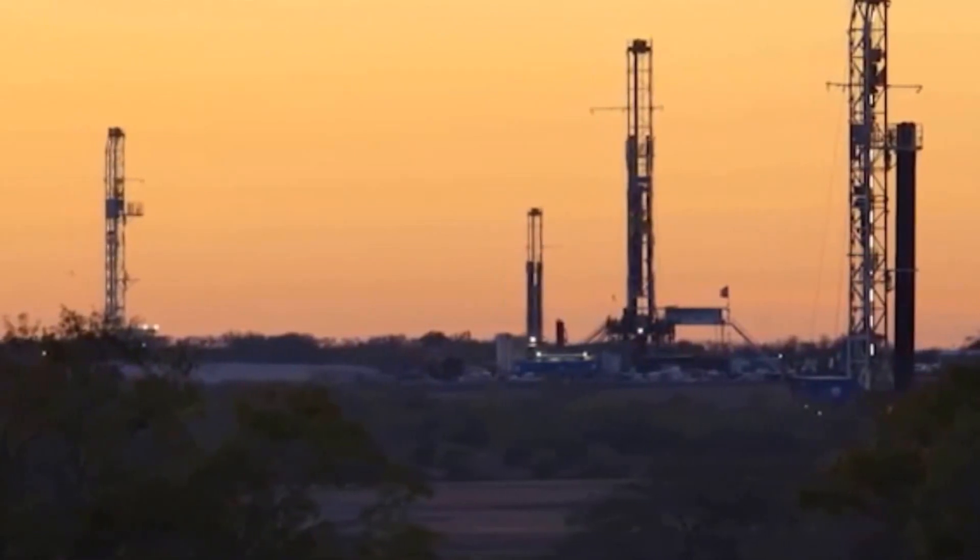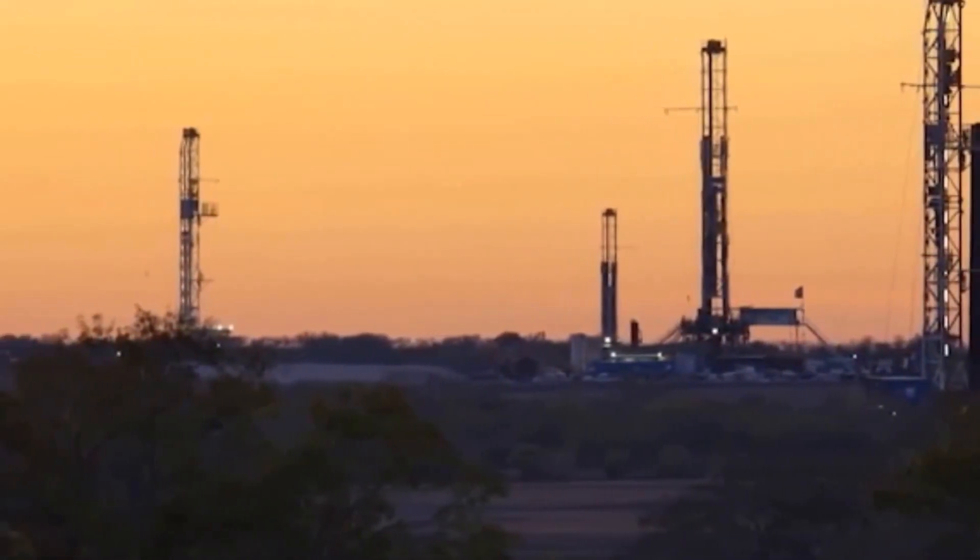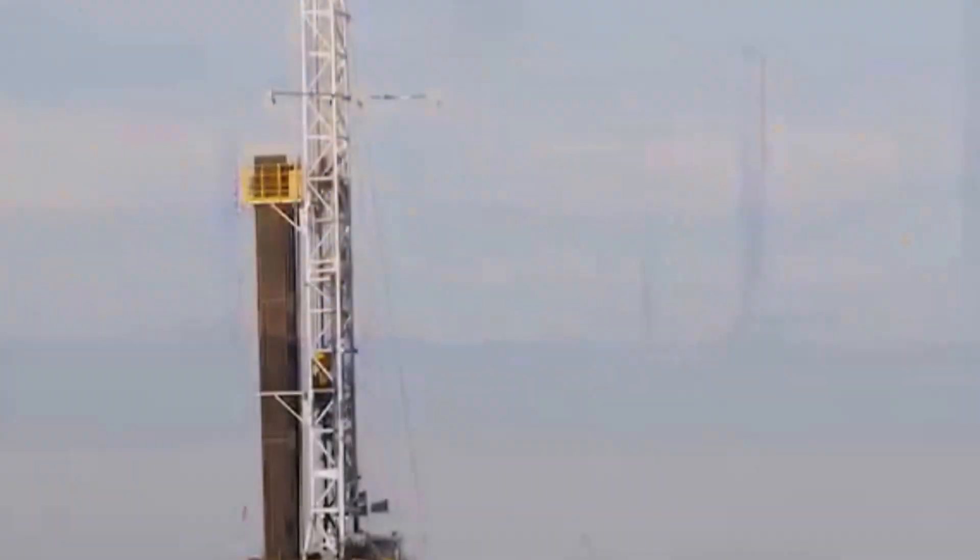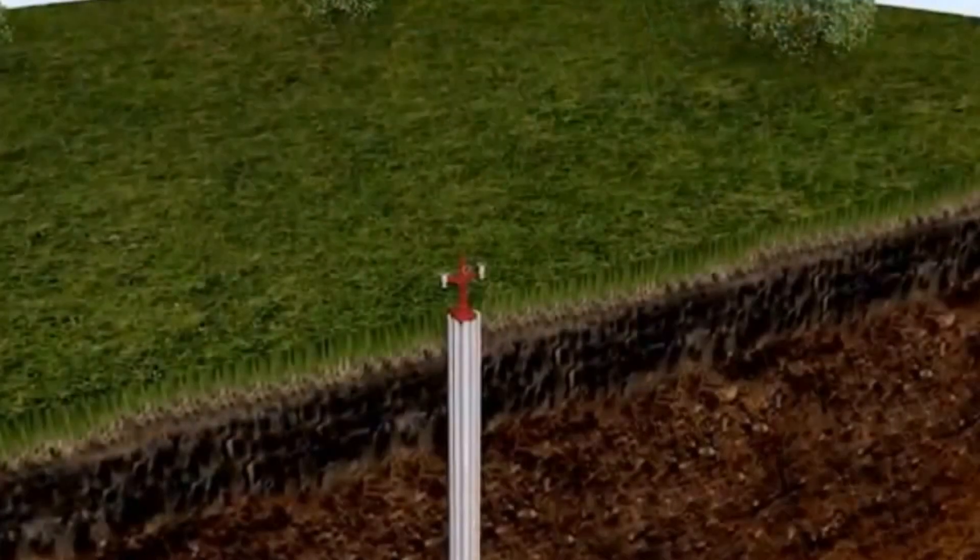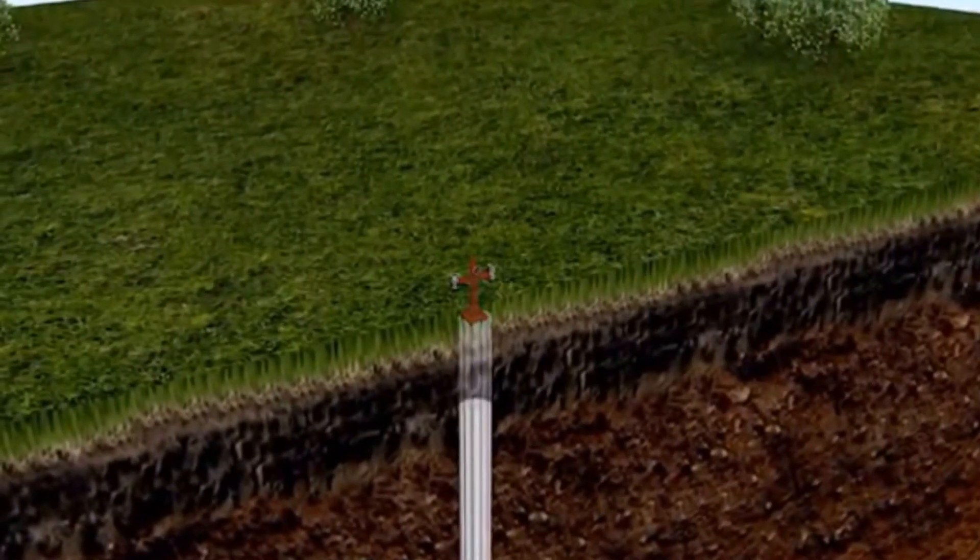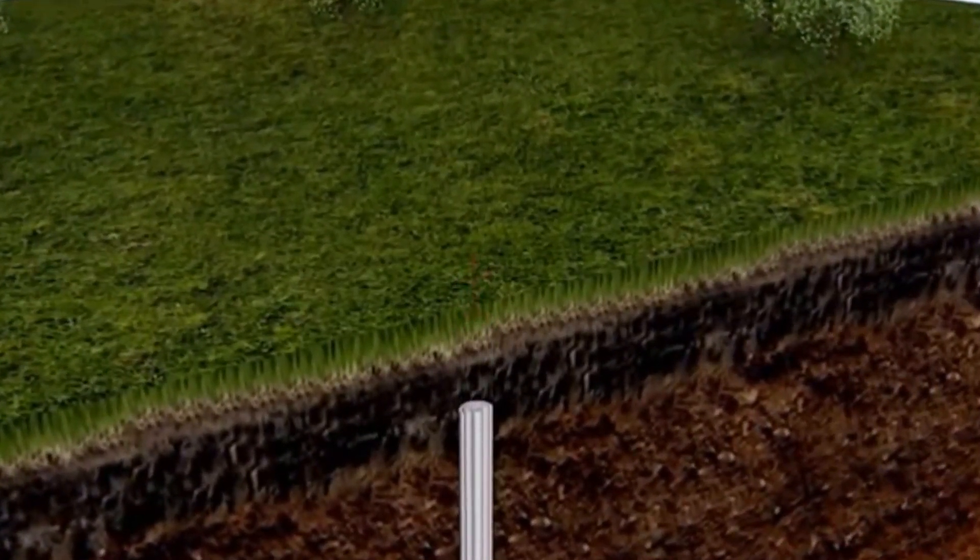When all of the oil or natural gas that can be recovered economically from a reservoir has been produced, work begins to return the land to the way it was before the drilling operations commenced. Wells will be filled with cement, and pipes cut off three to six feet below ground level.